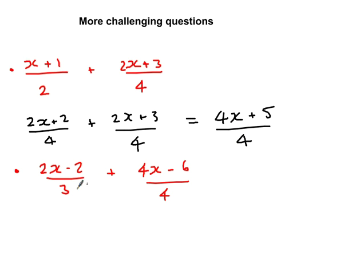A couple more to look at. This time I've got a 3 and a 4. Well, I'm going to make them both into 12. Now, if I times this fraction by 4, times the top by 4. Now, 2x times 4 is 8x minus 2 times 4 is minus 8.